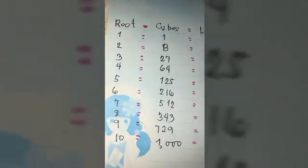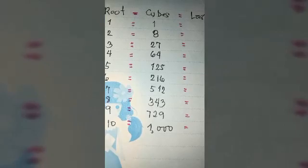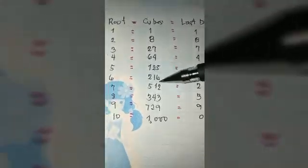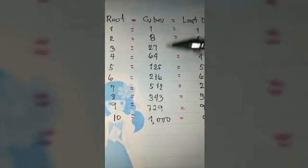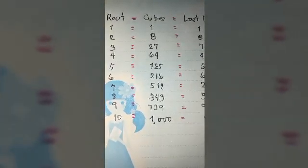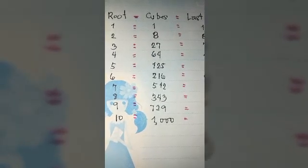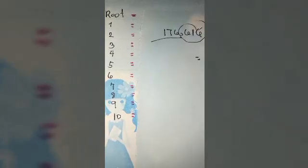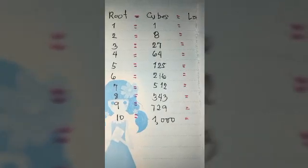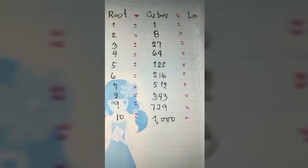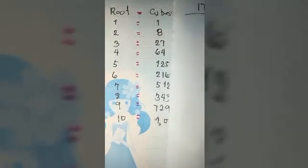Balik tayo sa table. Saan dito yung 176? Walang 176 dito. Dito tayo in between 125 and 216. Hindi tayo pwedeng mag-overlap. 176, so yung pipiliin natin is ano? 6 or 5? It's 5.